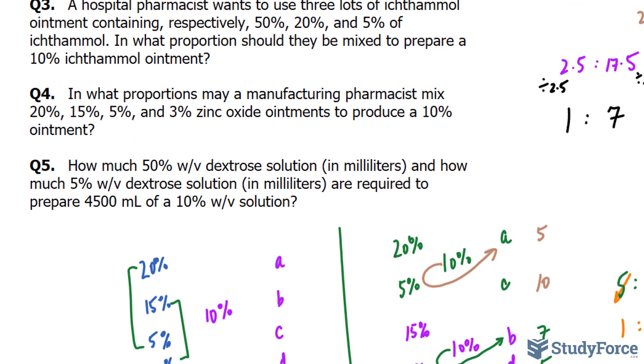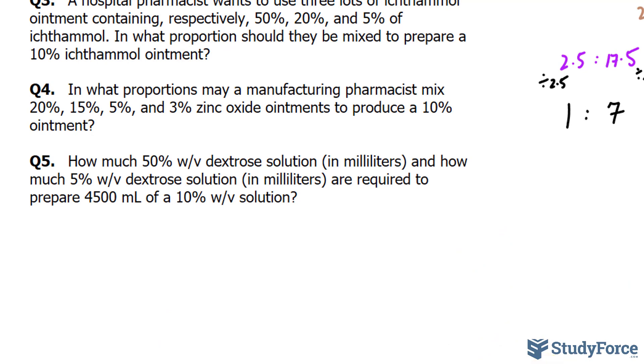Now, in our final question, we have, how much 50% weight per volume dextrose solution in milliliters, and how much 5% weight per volume dextrose solution in milliliters are required to prepare 4,500 milliliters of a 10% weight per volume solution? This question's interesting because now they are asking us for the quantity.